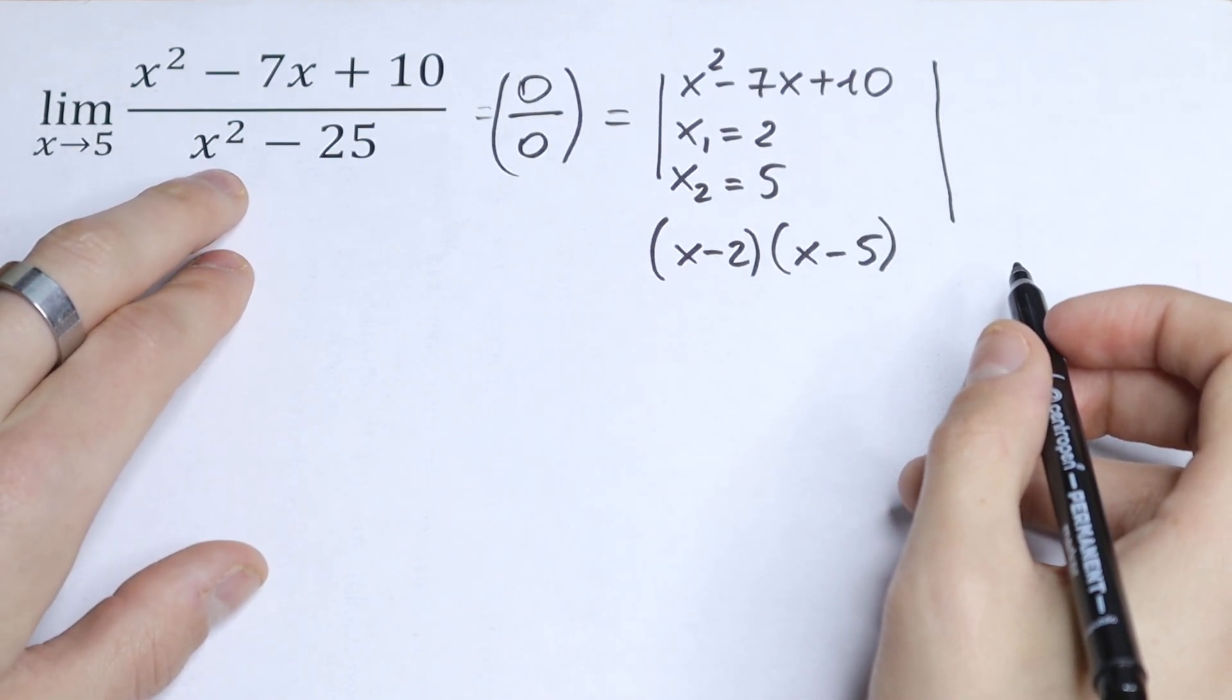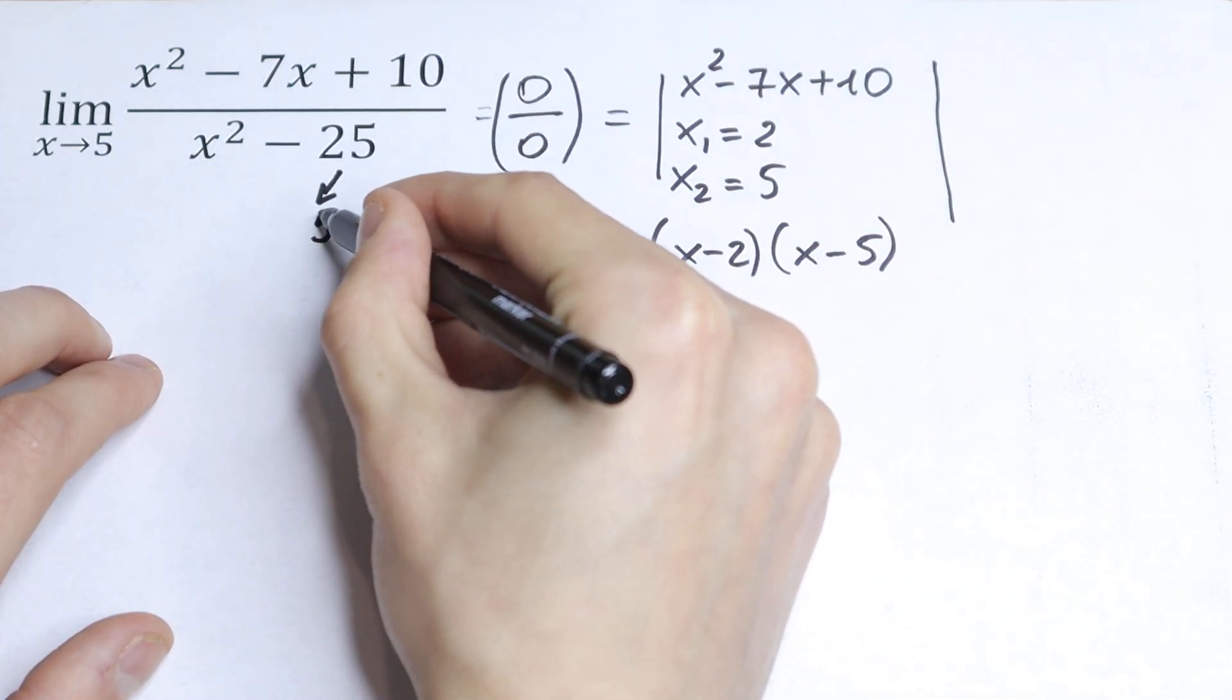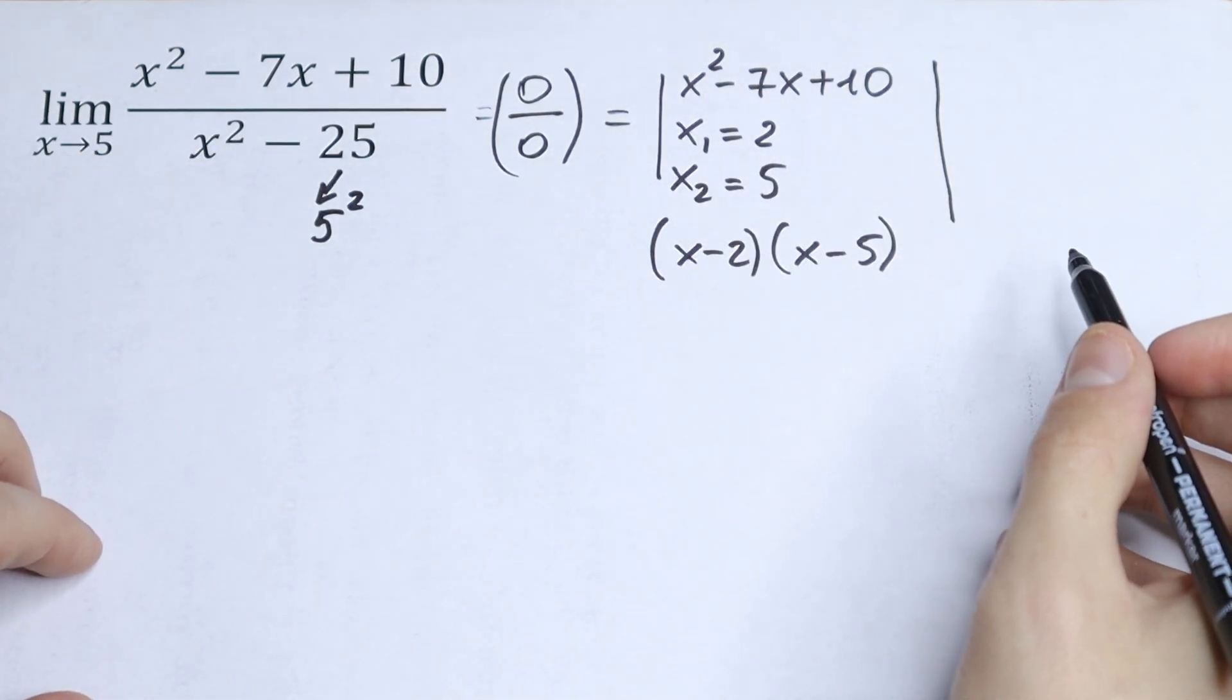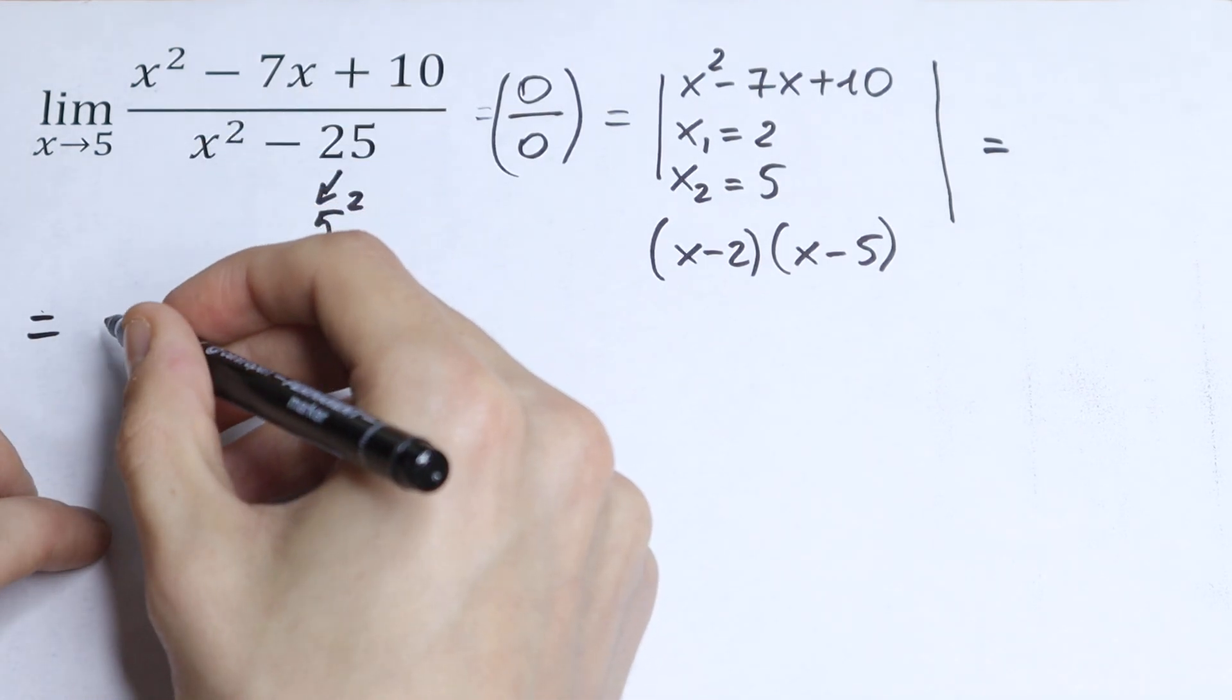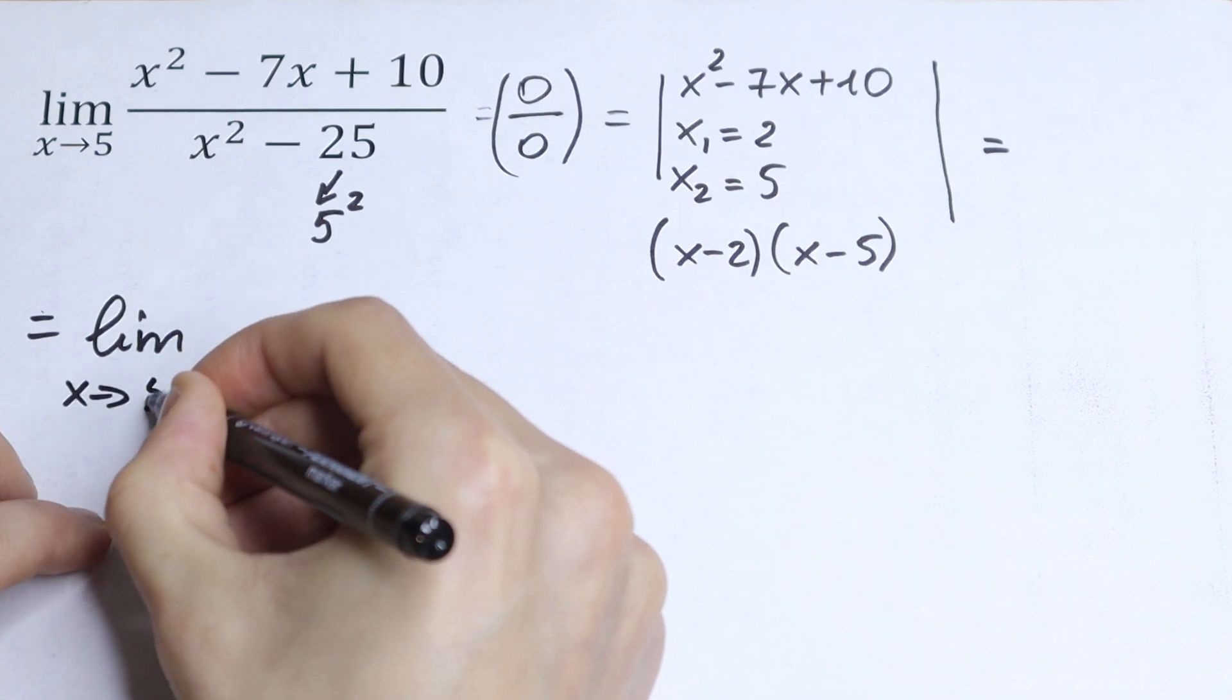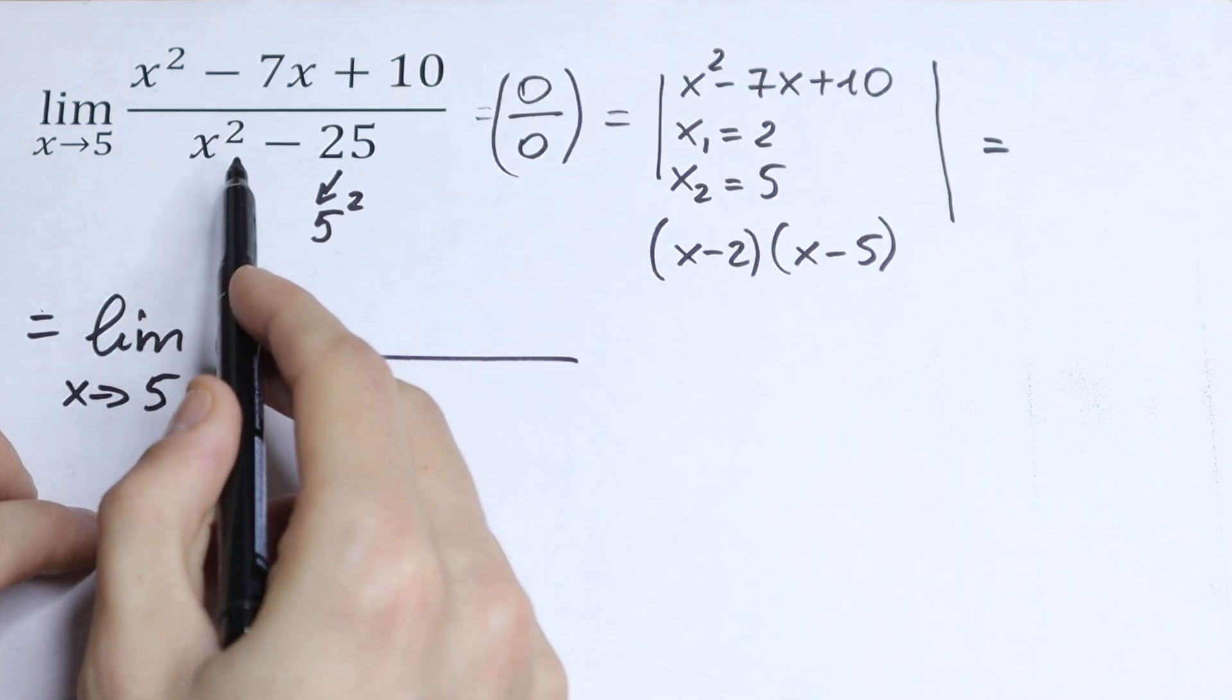What about the denominator? As you can see, 25 can be written as 5 squared, so we have a difference of squares. We will have limit as x approaches 5, and in the denominator we have the classic formula a² minus b².